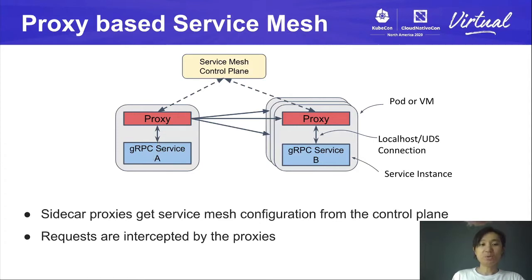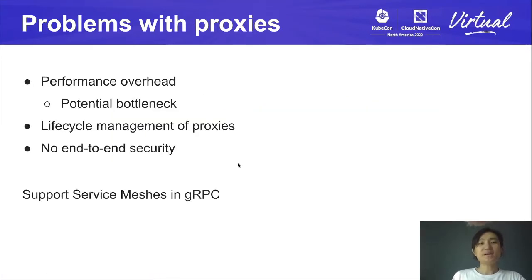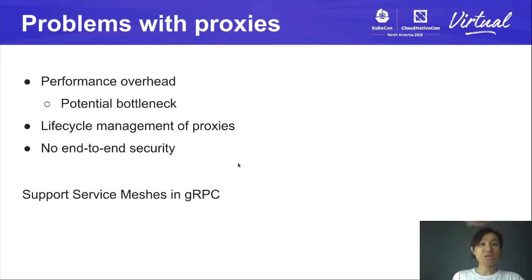For example, there's only one connection between the application and the proxy, so the connection management feature within gRPC is not being used. There are some other potential problems caused by the proxy. One of them is performance — there will be one proxy on the client side and one on the server side, which can add overhead and latency, and the proxy could become a bottleneck. Another problem is that the proxies are standalone binaries that need to be deployed along with the application, so you also need to manage their lifecycle: deploy them, upgrade them, and health check them. A third problem is you will not have end-to-end security because the proxies in between need to intercept the traffic.